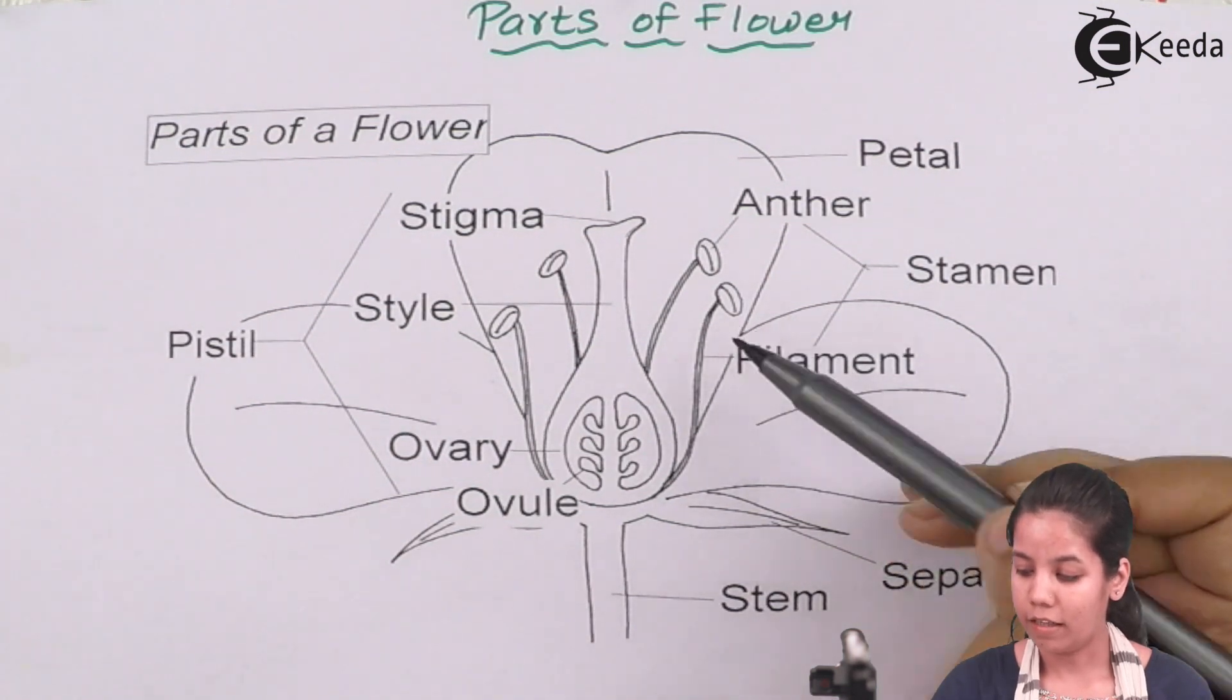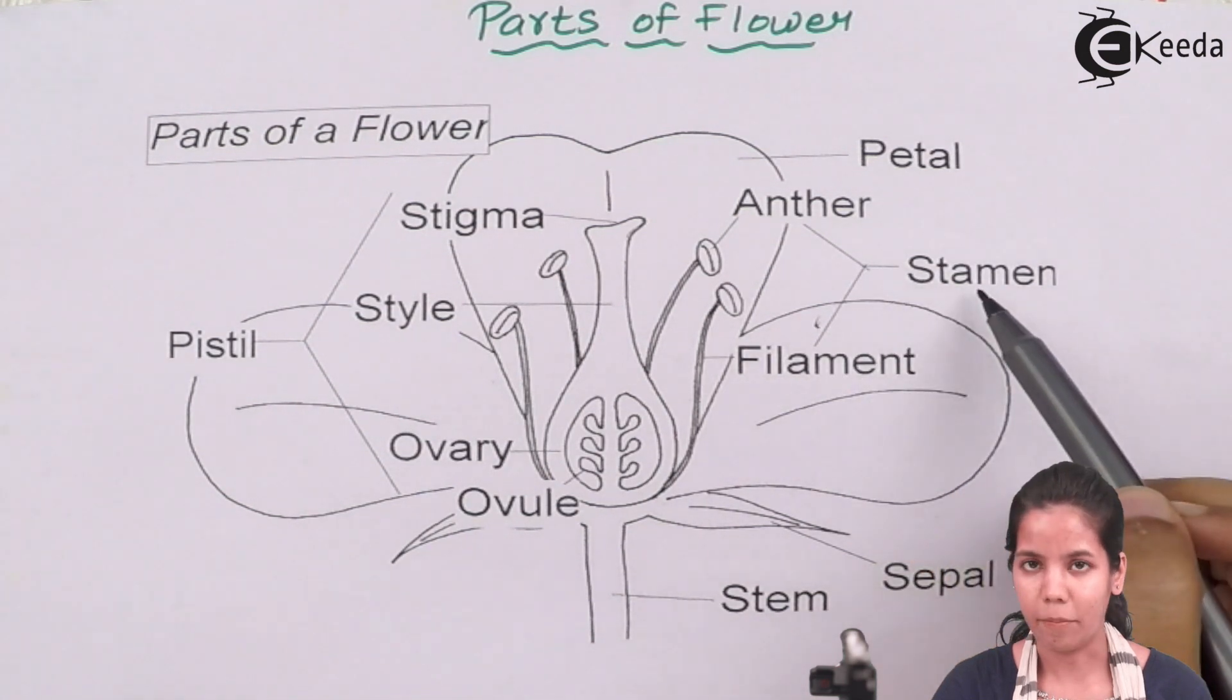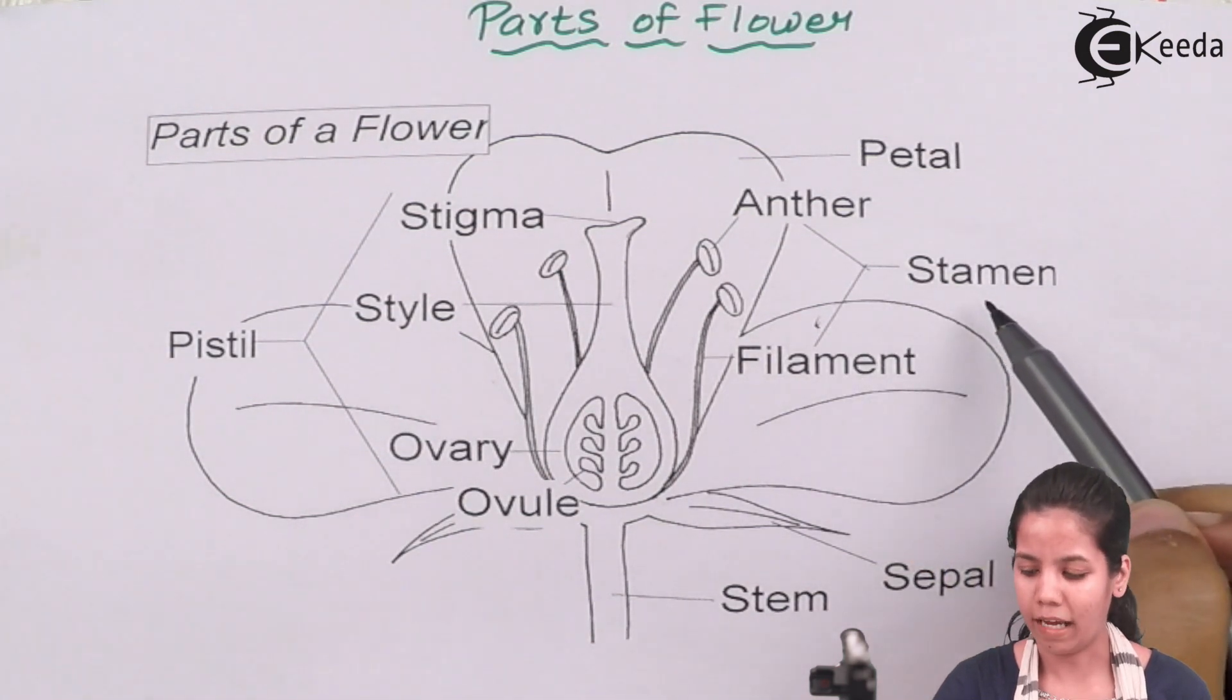This is the male gametophyte. Now the male gametophyte will have anther and filament. Together they are called as stamen, or you can say androecium, or male gametophyte.